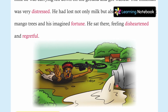देखिए friends, यहाँ पर आपको picture दिखाई दे रही है — जो milk can था, उसमें से दूध spill हो गया। जब ये दूध गिरा, तो सिर्फ दूध ही नहीं spill हुआ — जो उसने सपने देखे थे, जैसे city जाकर mango seeds लाना, mango trees से mangoes बेचना, बड़ा घर बनाना — वो सारे सपने भी उसके बिखर गए।